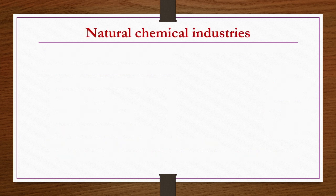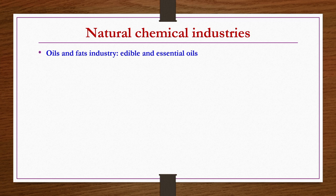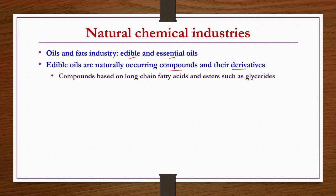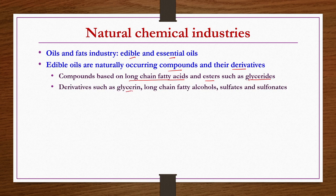Starting with natural chemical industries — the first is the oils and fats industry. Edible oils are naturally occurring compounds and derivatives. The chemical nature of these naturally occurring components is mostly long-chain fatty acids and esters such as glycerides. Their derivatives are glycerin, long-chain fatty alcohols, and some sulphates and sulfonates.